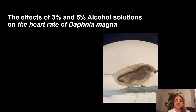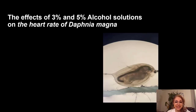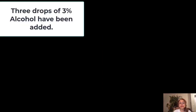Hello everyone. Today we are going to see the effects of 3% and 5% alcohol solutions on the heart rate of Daphnia Magna. I hope you have watched another video that shows how to determine the normal heart rate of Daphnia. If you haven't watched that video, click on the link provided in the description. 3 drops of 3% alcohol have been added to the Daphnia.